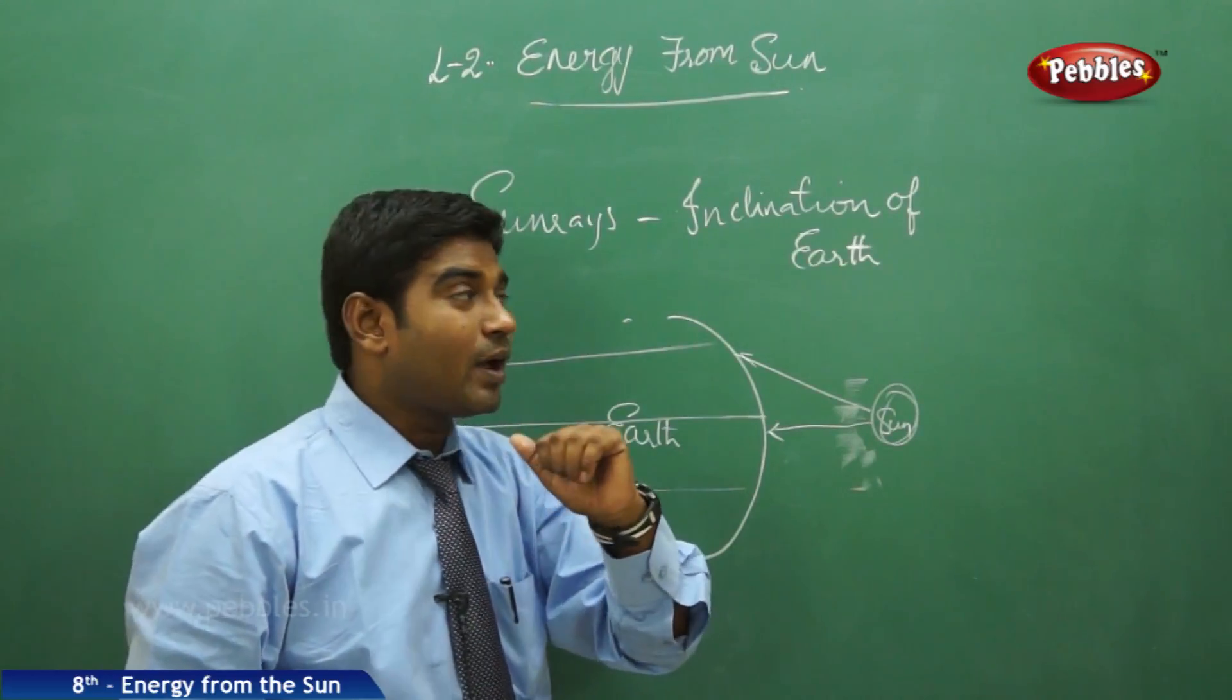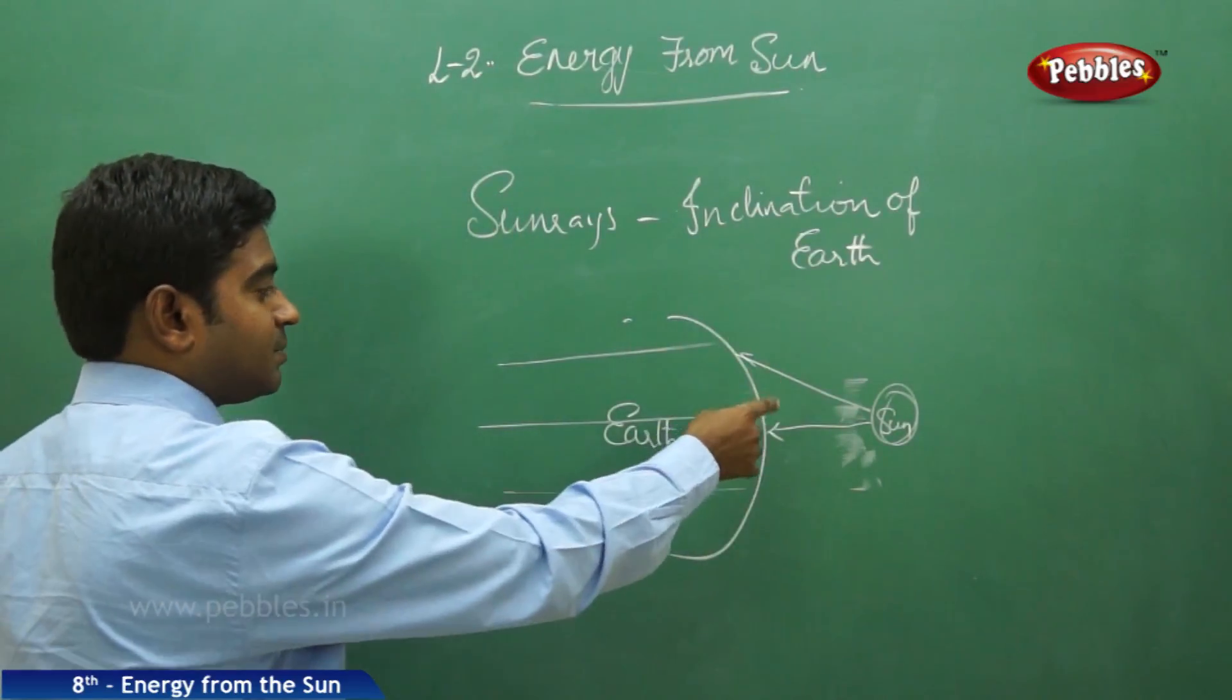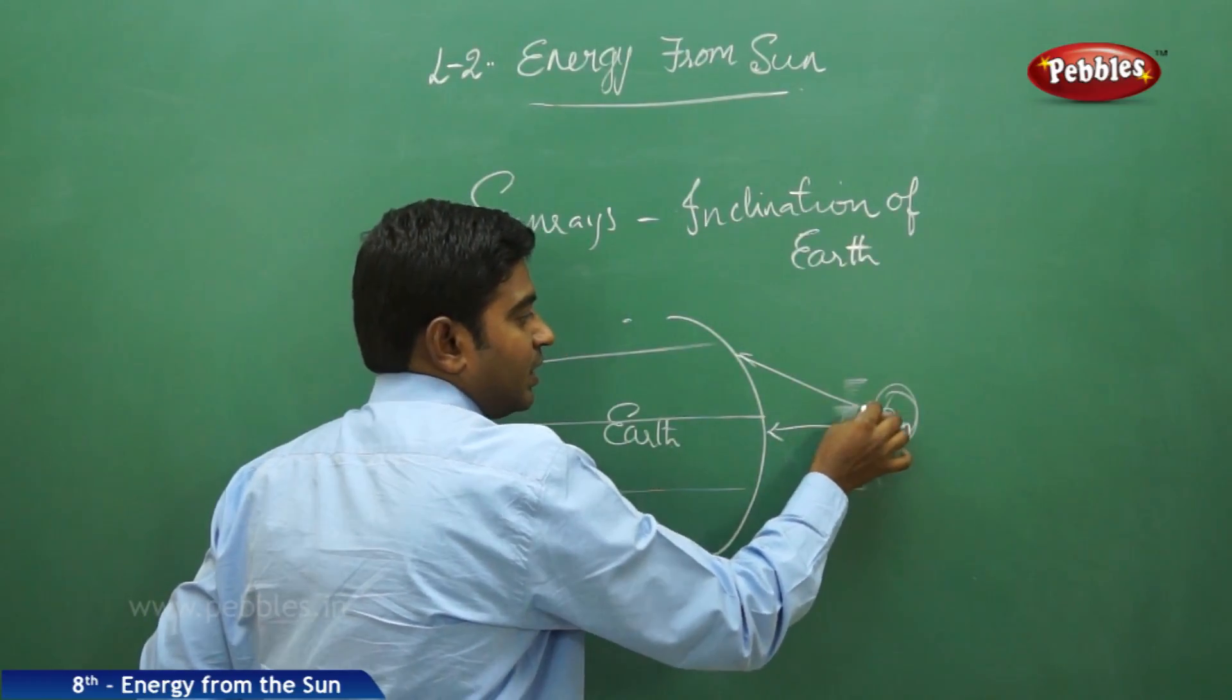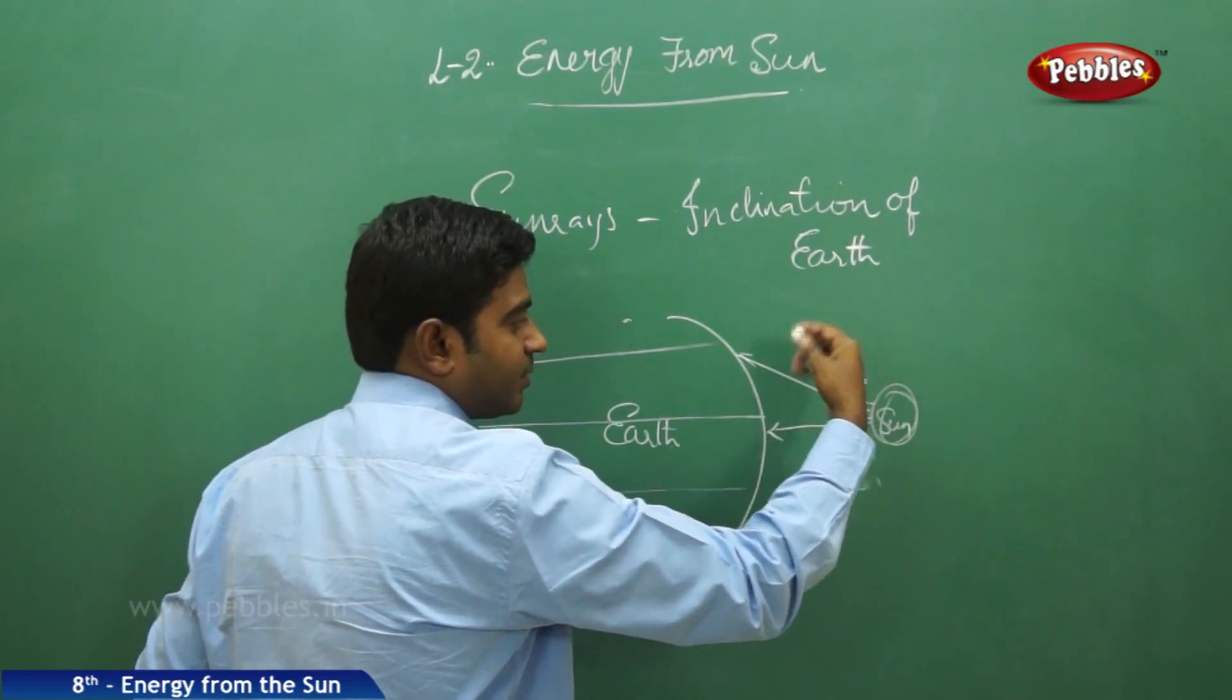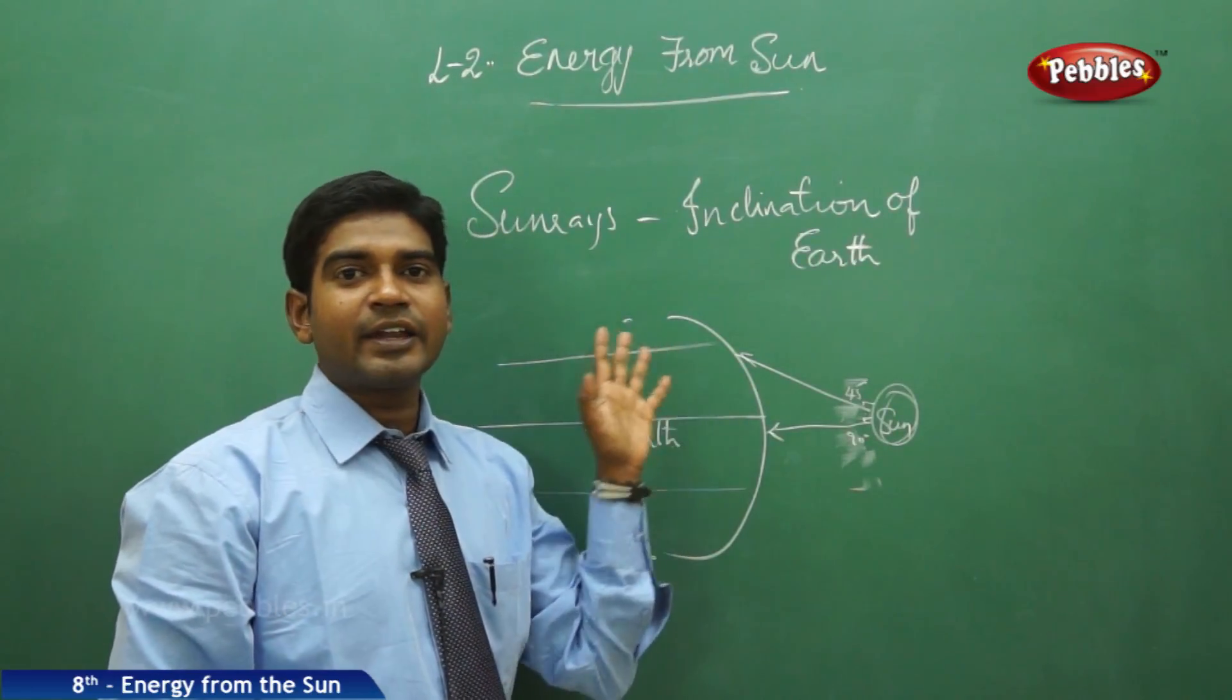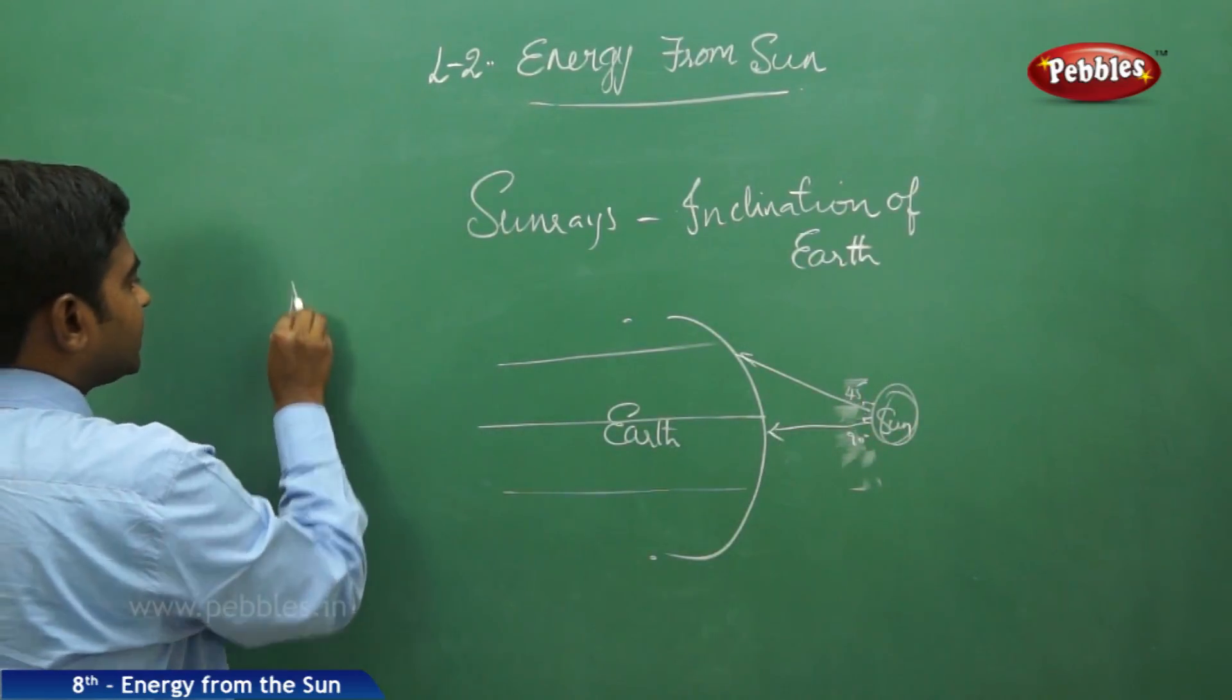This is one basic reason why the sun rays and the angle of incidence of the earth is required. Now, the sun rays and the earth angle here is 90 degrees. Here it is 45 degrees. So it goes on changing. This angle brings variation in the effect of the sun's rays connecting with the earth. This angle is known as the angle of incidence.